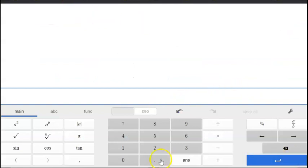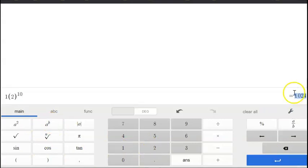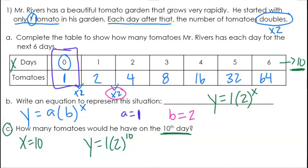And we can definitely use our calculator here. We have one and then in parentheses two raised to the power of 10. And that is going to be 1,024. So on the tenth day, he would have 1,024 tomatoes. That's a lot of tomatoes.